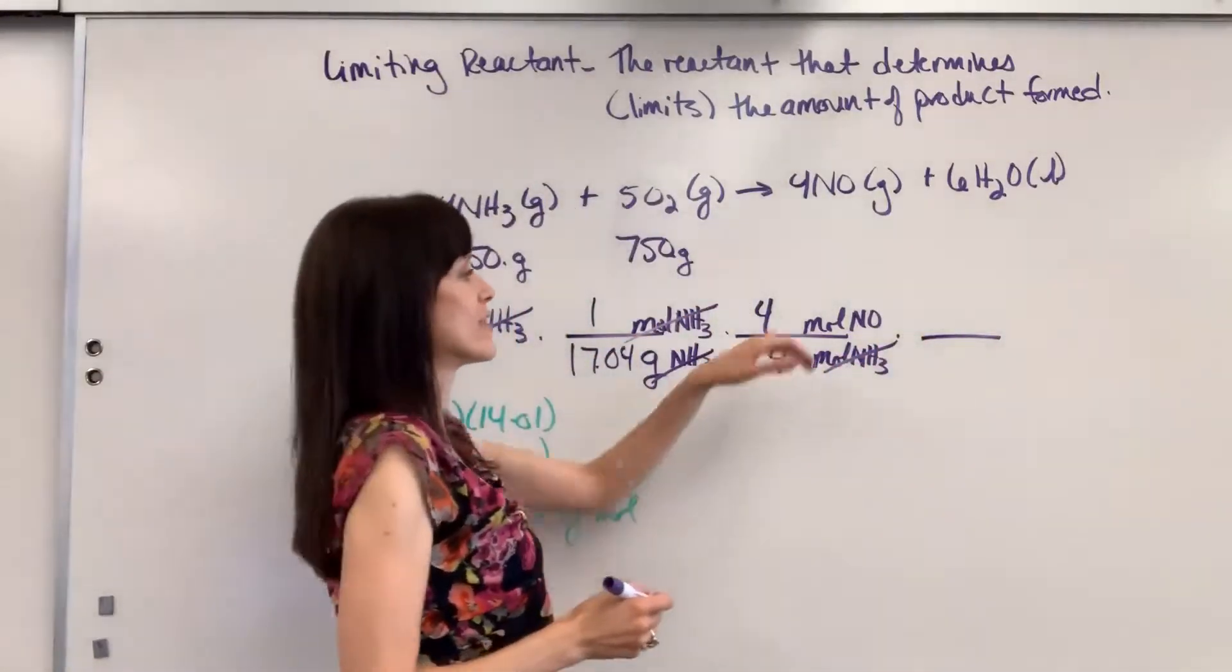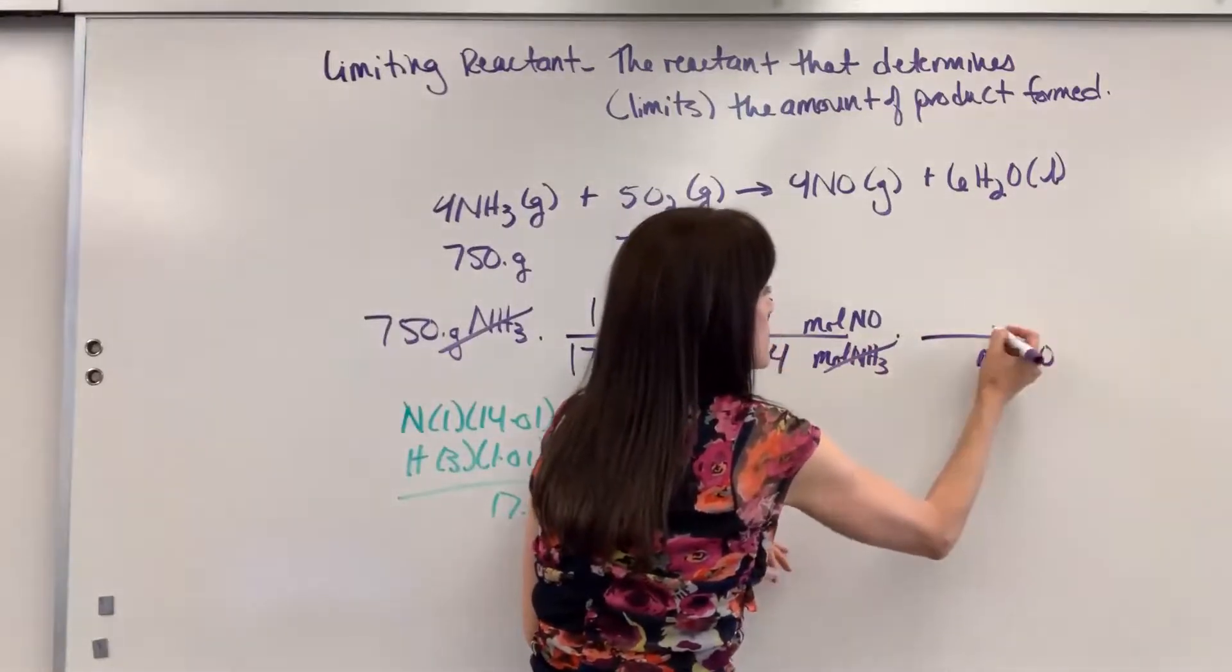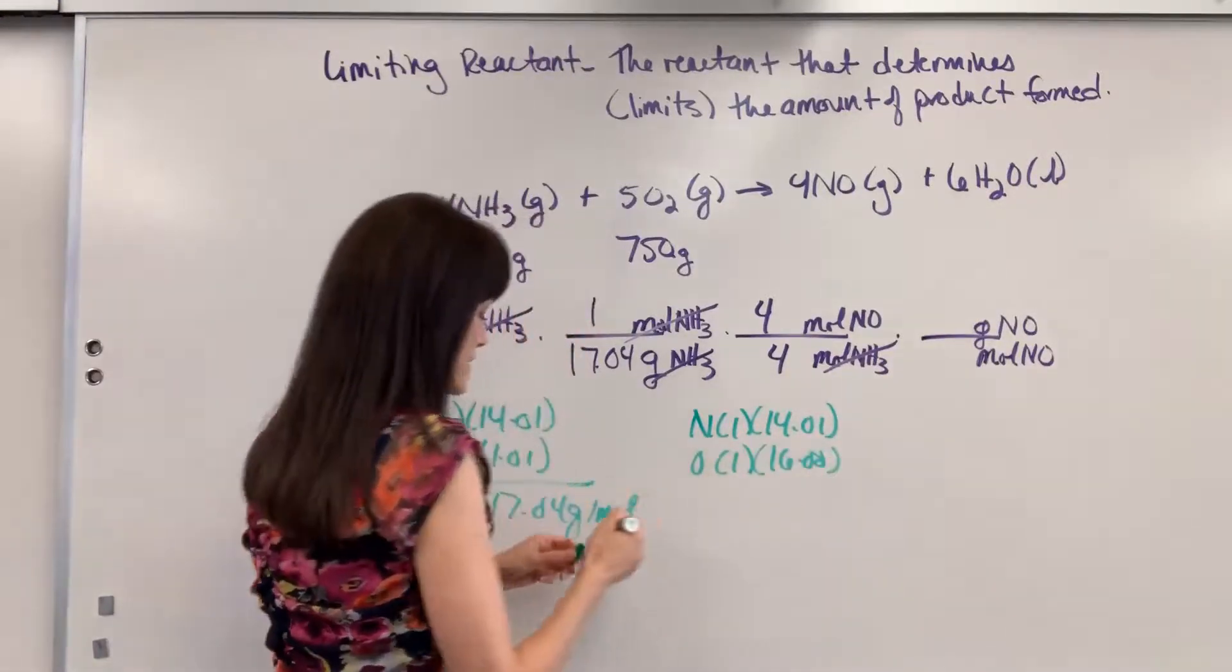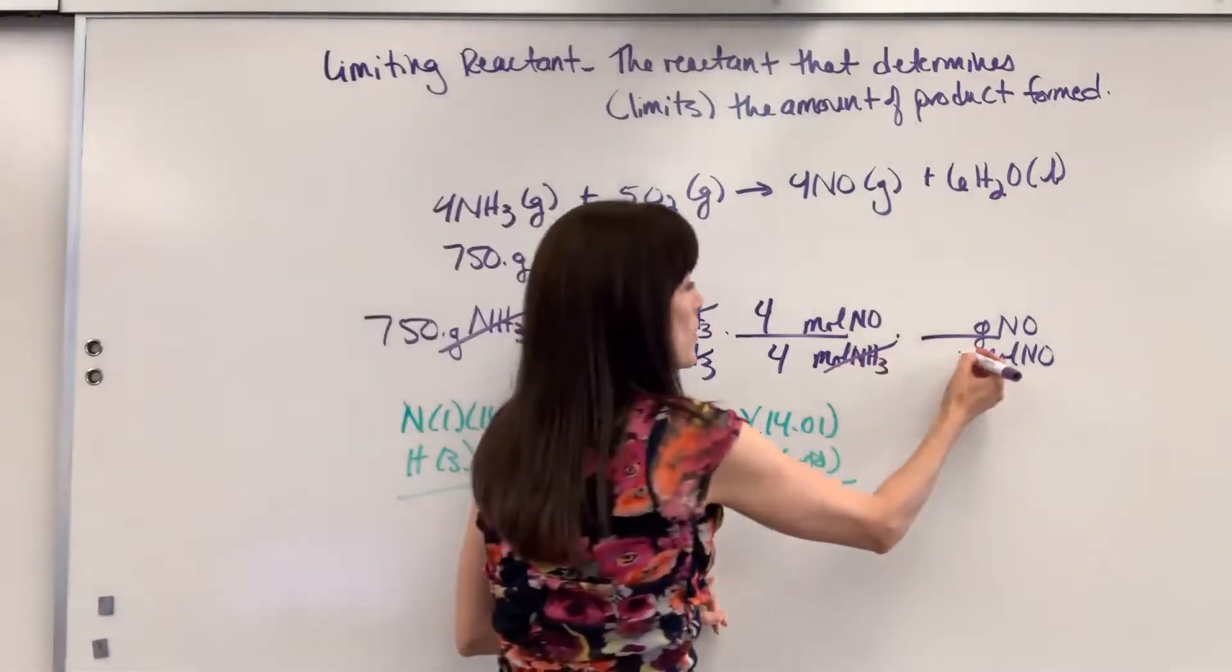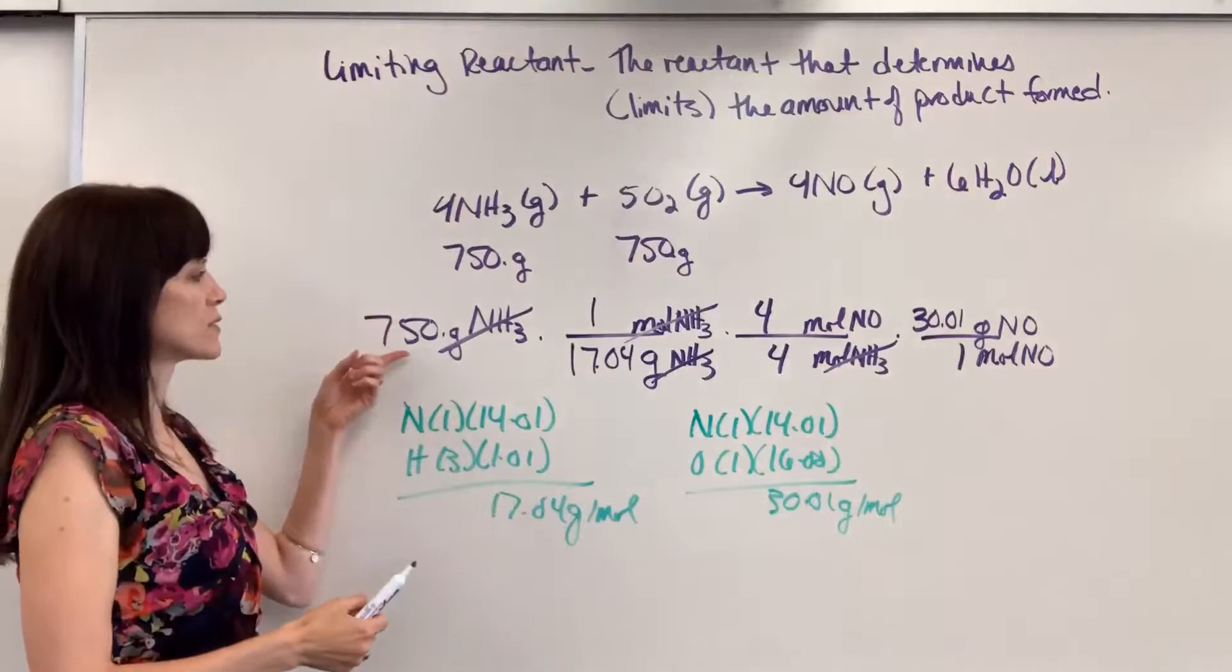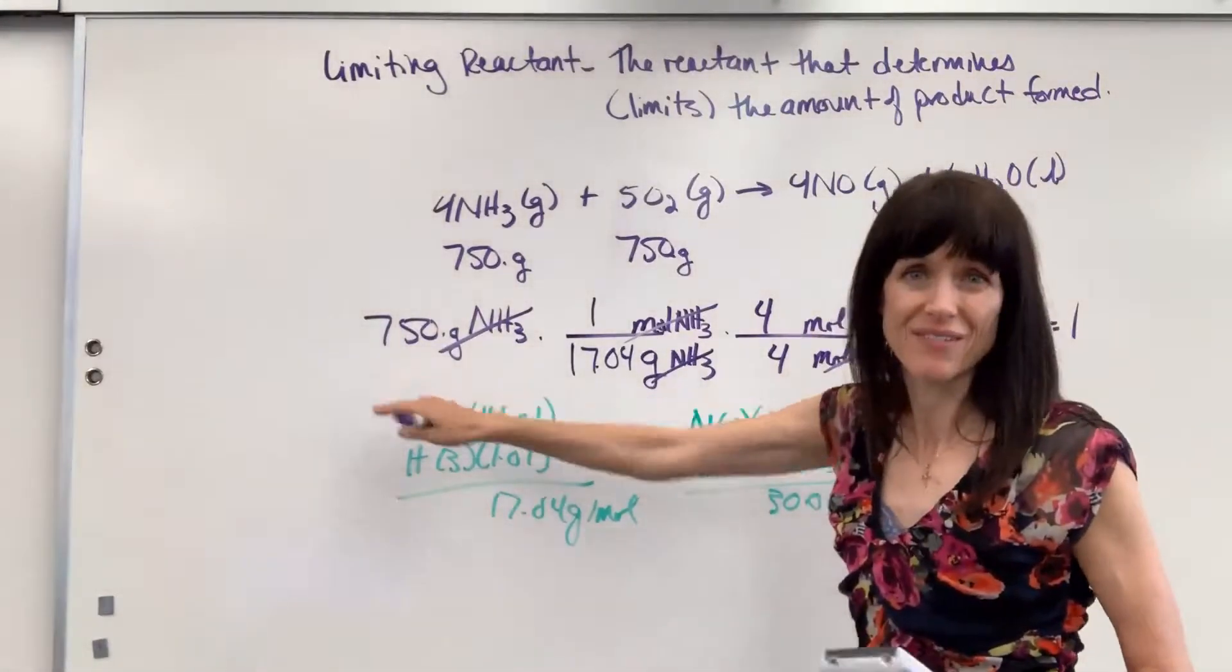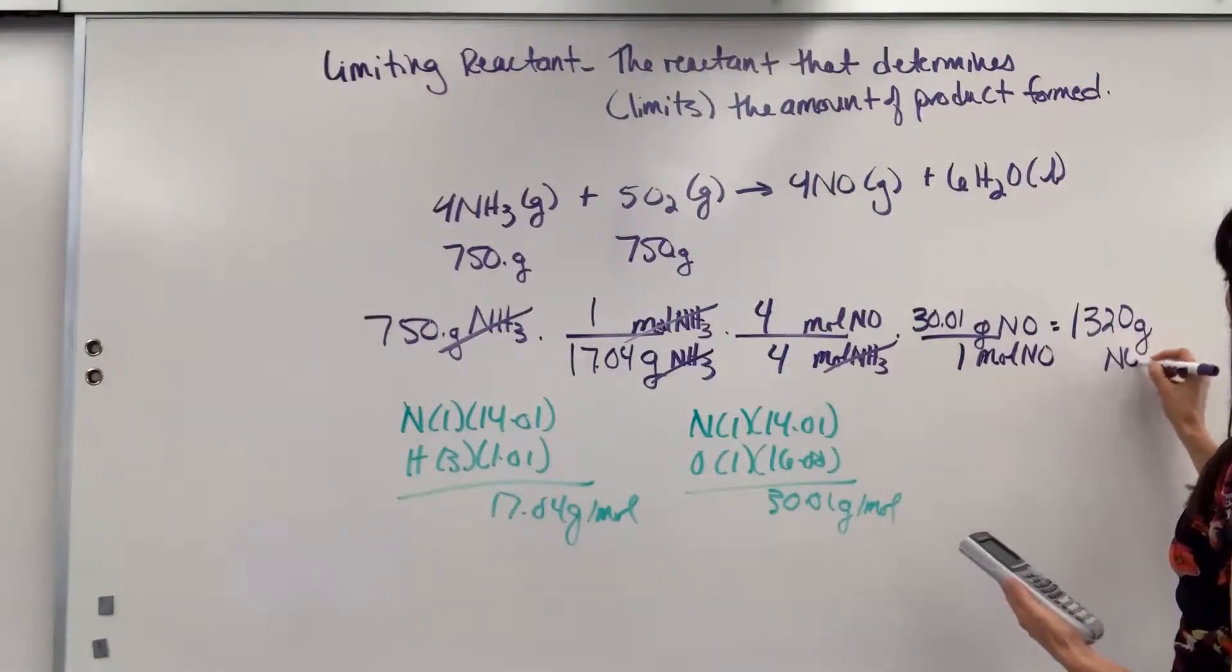Notice moles of ammonia cancel. I have moles of nitrogen monoxide. Now I have to bring that to grams. So we use molar mass. Moles of nitrogen monoxide on the bottom, grams on the top. Let's do molar mass on this one. We have one nitrogen is 14.01. We've got one oxygen is 16. Add that together and we get 30.01 grams per mole. So now we can put our numbers. We've got one mole of the nitrogen monoxide weighs 30.01 grams. Okay, now we can put this all on our calculator. 750 divided by 17.04 times 4 divided by 4 times the 30.01 and our answer is 1,320.